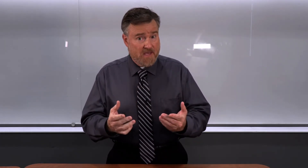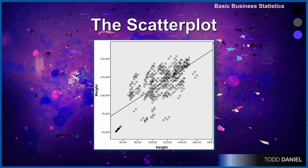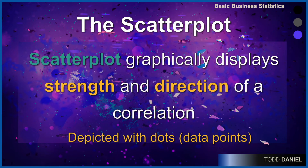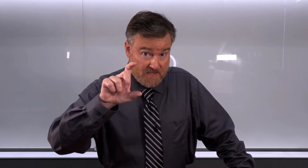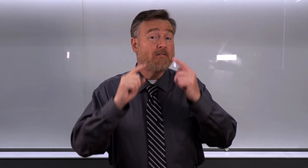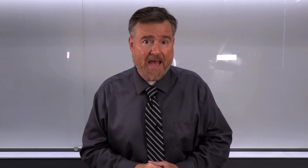Now let me remind you of something else we have learned: scatter plots. When we create a scatter plot, we plot one variable on the x-axis, a second variable on the y-axis, and create dots which represent an individual's score on both variables. The scatter plot graphically displays both the strength and the direction of a correlation. Each pair of x and y scores is called a data point, and the total number of pairs is our sample size. If an individual has an x-score but not a y-score, they won't appear in our correlation — they must have a pair of scores.